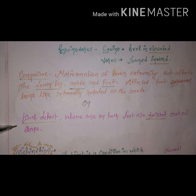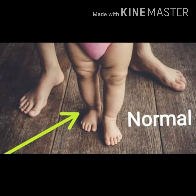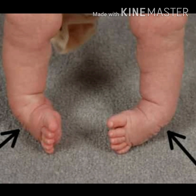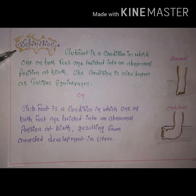Clubfoot is a birth defect where one or both feet are twisted out of shape. This is the normal foot when standing, and this is the foot in the condition of clubfoot — it is twisted out. Clubfoot means the ankle or foot will be elevated and turned inward, though it can also be outward. The meaning of talipes equinovarus specifically is that the heel will be turned inward.